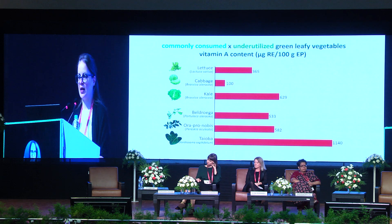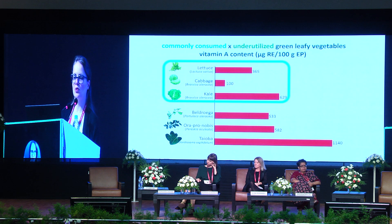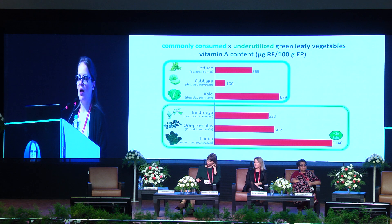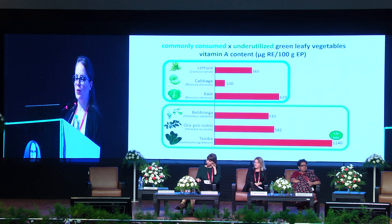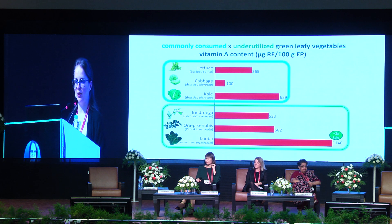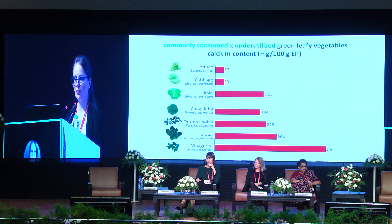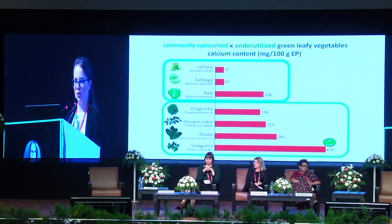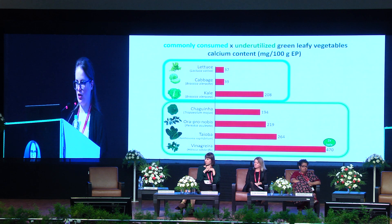When we look at green leaf vegetables, the most consumed are lettuce, cabbage, and kale. Comparing these against underutilized ones, we can see similar and in some cases much higher content. Looking at taioba, we have twice the amount of vitamin A found in kale. For calcium content, we also see much higher values in the underutilized green leaf vegetables.